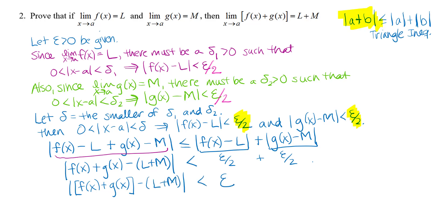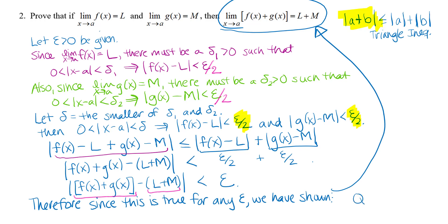So we've shown that the limit as x → a of f(x) + g(x) equals L + M: the absolute value of that function sum minus the claimed limit is less than epsilon. That's how epsilon-delta proofs end — we arrive at the inequality we were trying to show. One concluding statement, then QED.